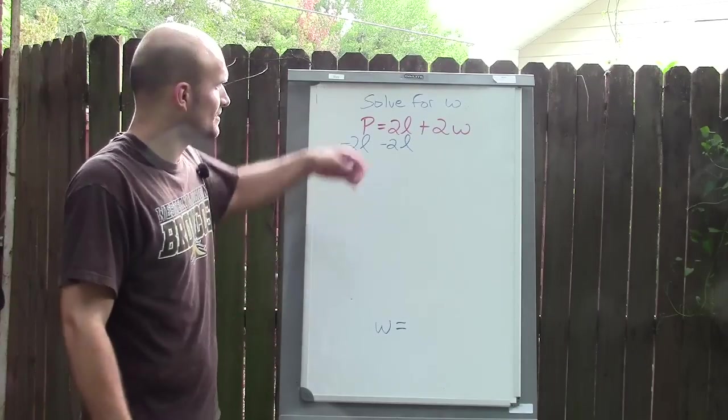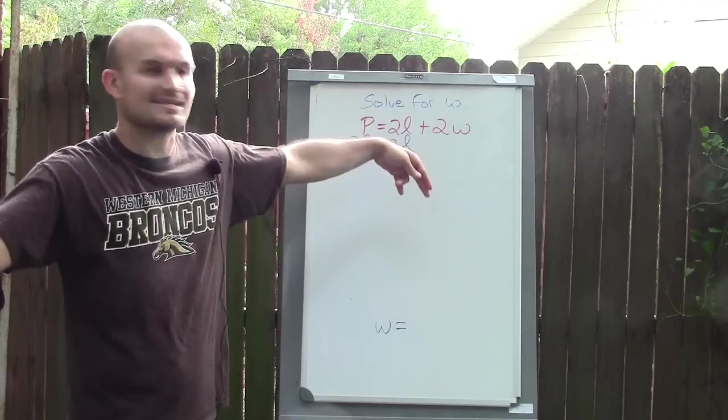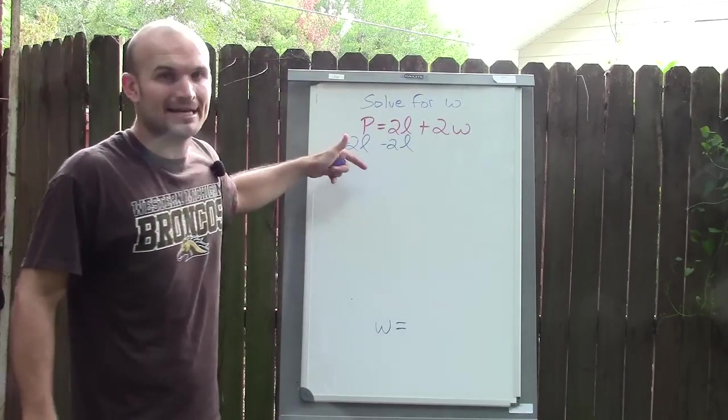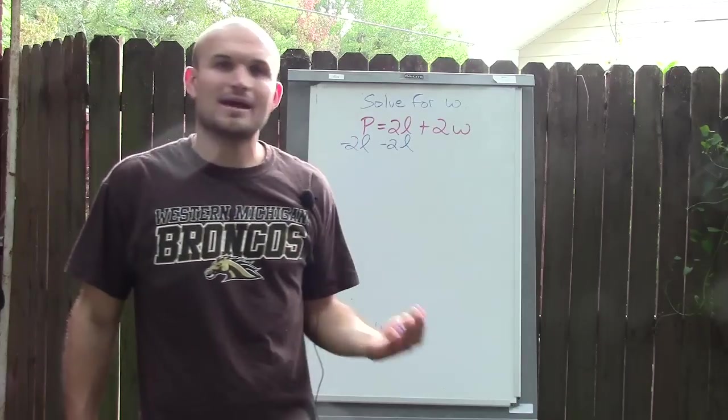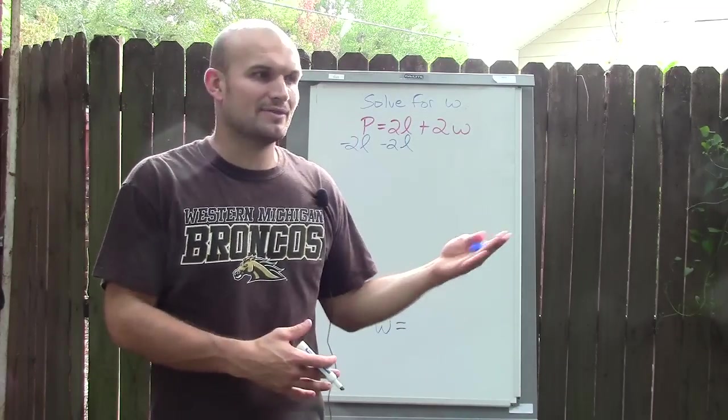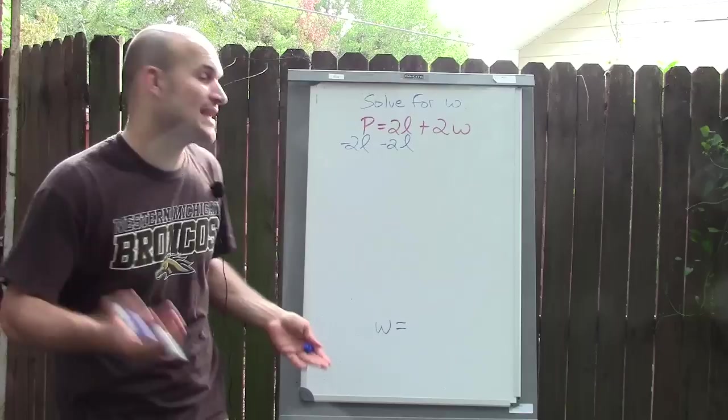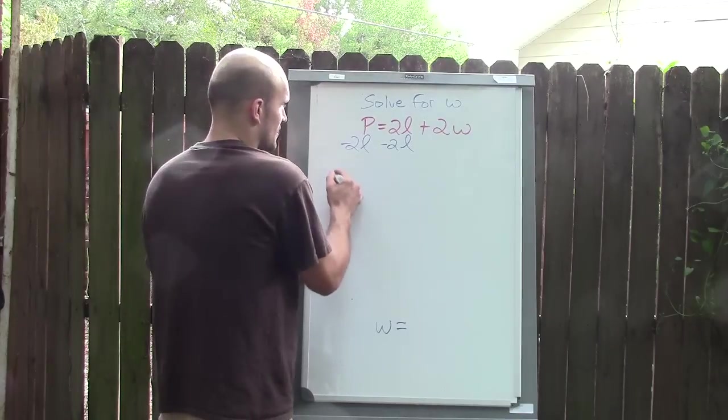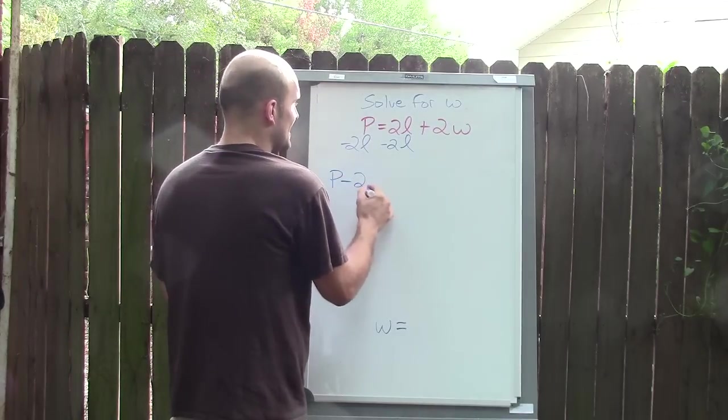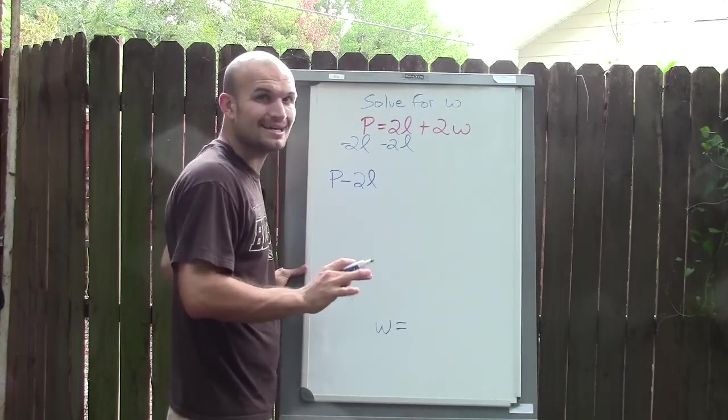Now here's where it gets difficult. 2L minus 2L we know is 0, right? But what's P minus 2L? Well, since those don't have the same factors—one has a factor of P, one has a factor of L—they're not like terms. So we're just going to leave it as P minus 2L.